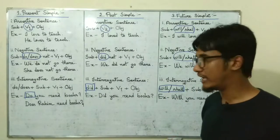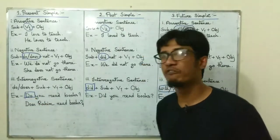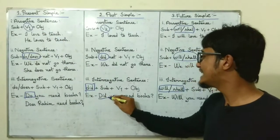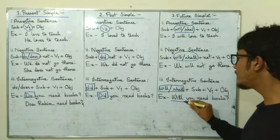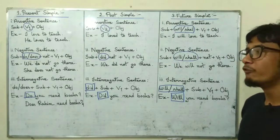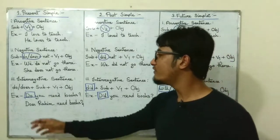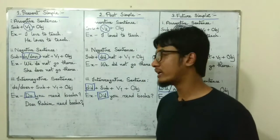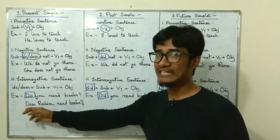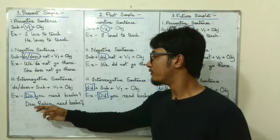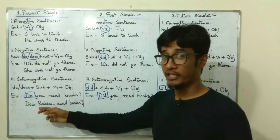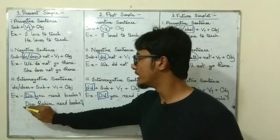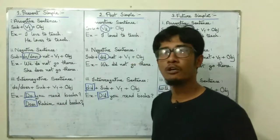No change anywhere else — only in the auxiliary verbs: use do in present simple, did in past simple, and will or shall in future simple. And note: if the subject is he, she, or a singular noun, you'll have to use S or ES with the auxiliary verb. Here the subject is a singular noun, Rahim — so the auxiliary verb will be does, not do: 'Does Rahim read books?'